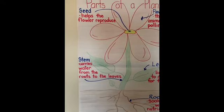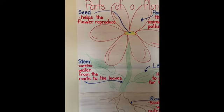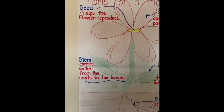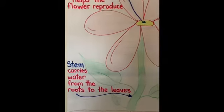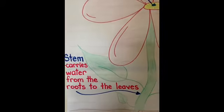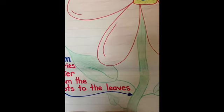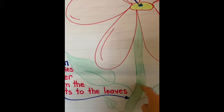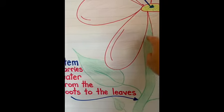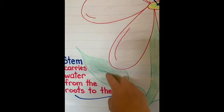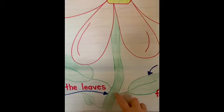The next part of our plant is the stem. The stem carries water from the roots all the way to the leaves.